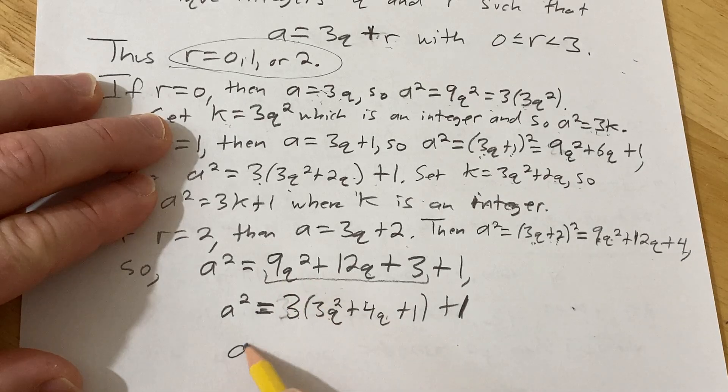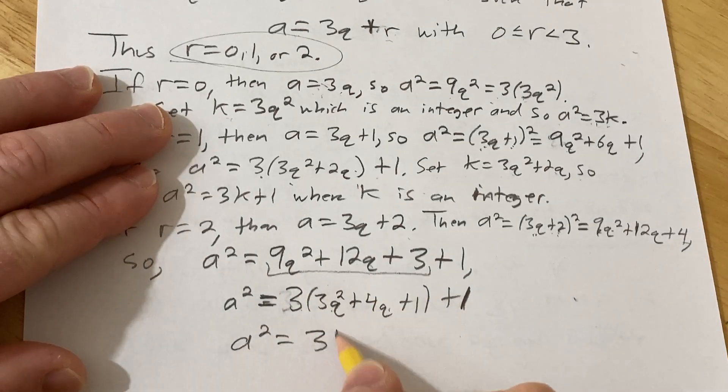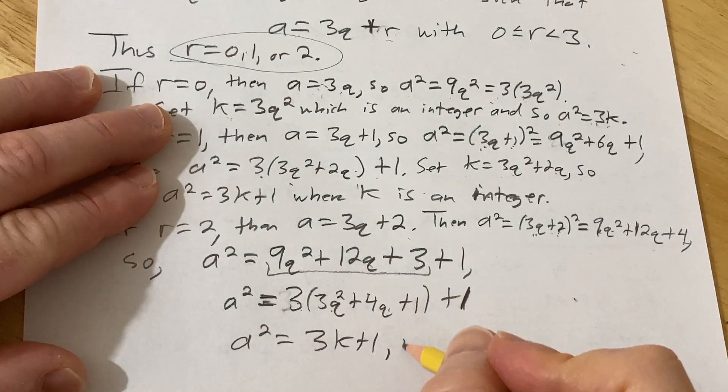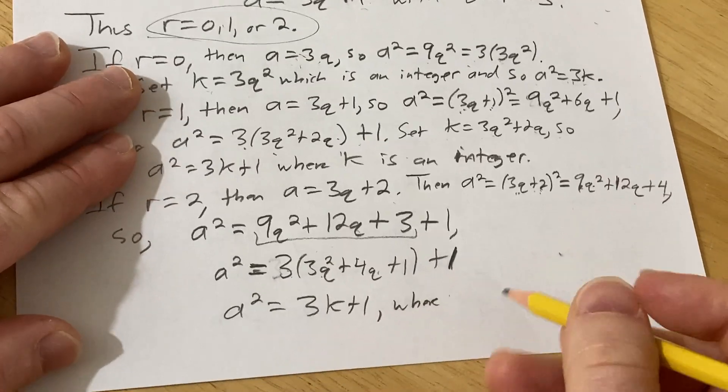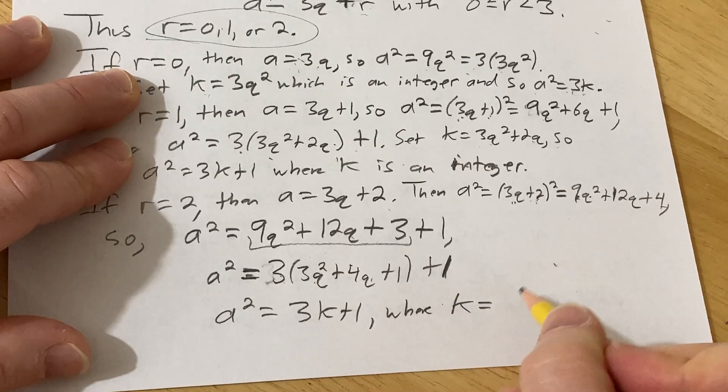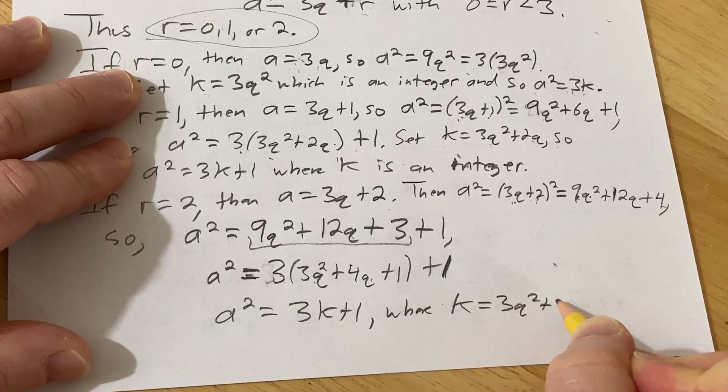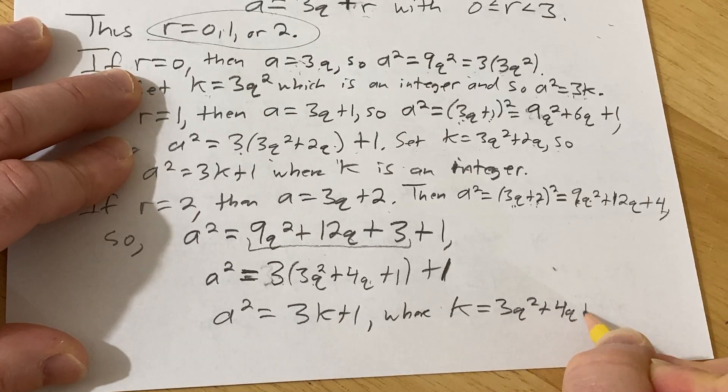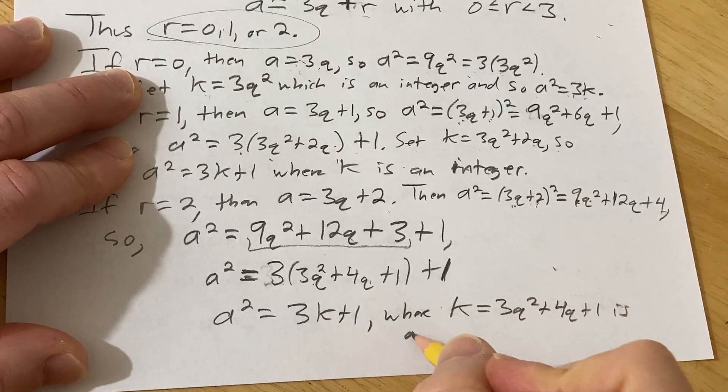So here, this will be a squared equals 3k plus 1, where k equals 3q squared plus 4q plus 1 is an integer.